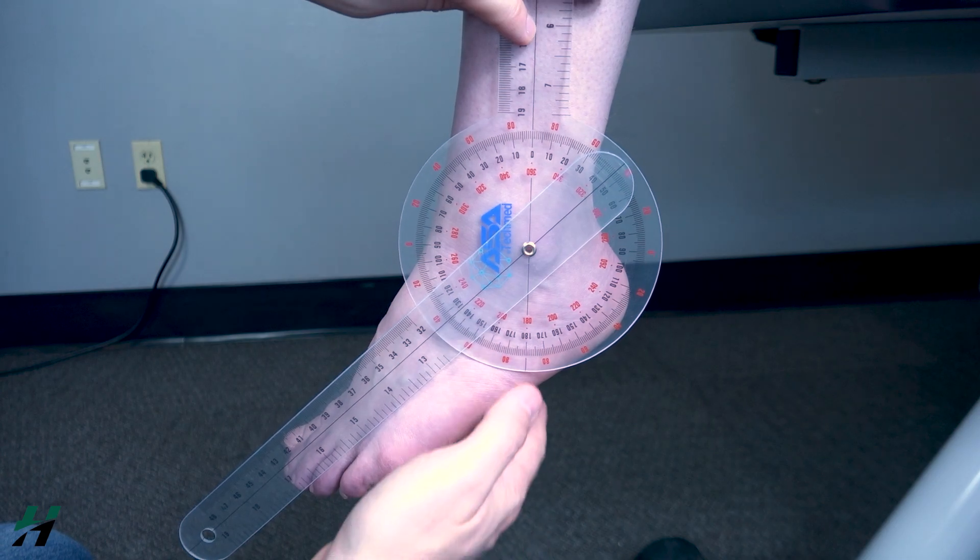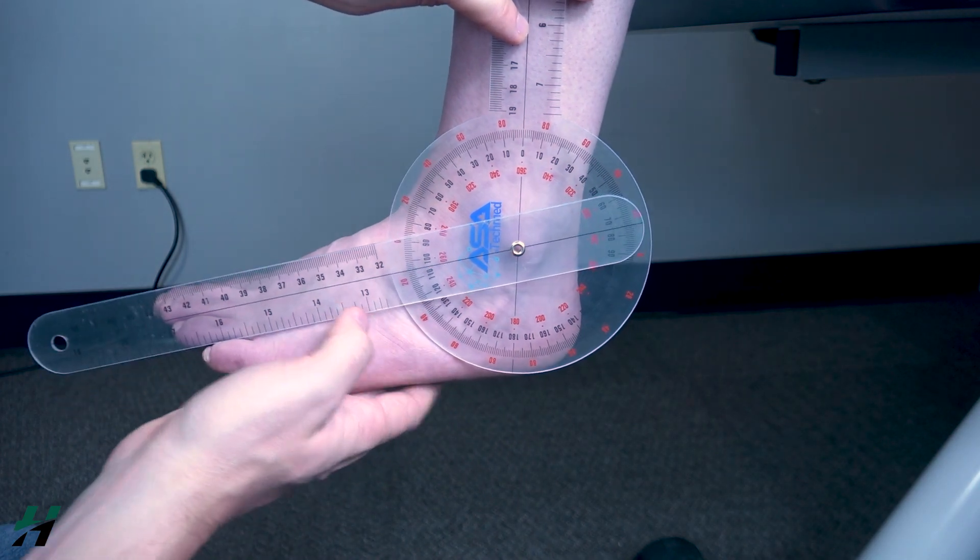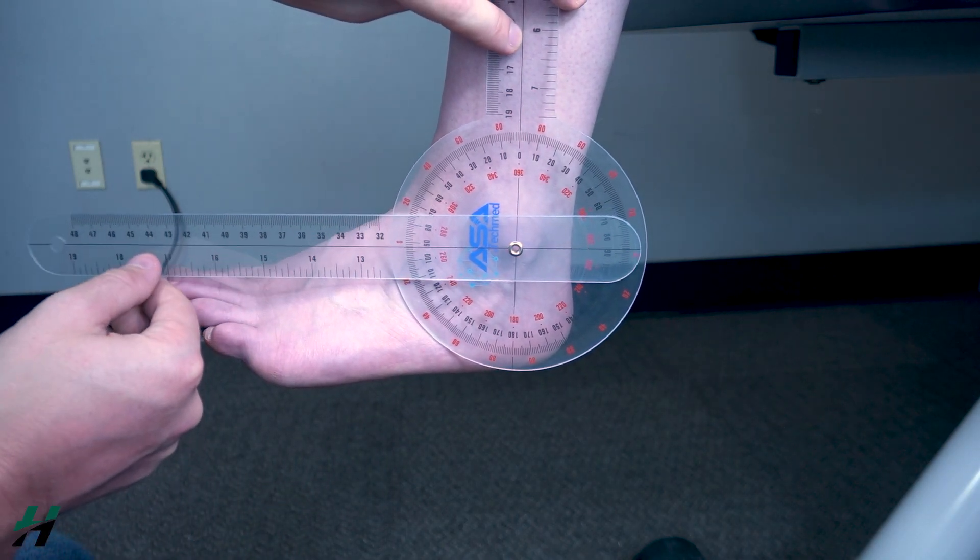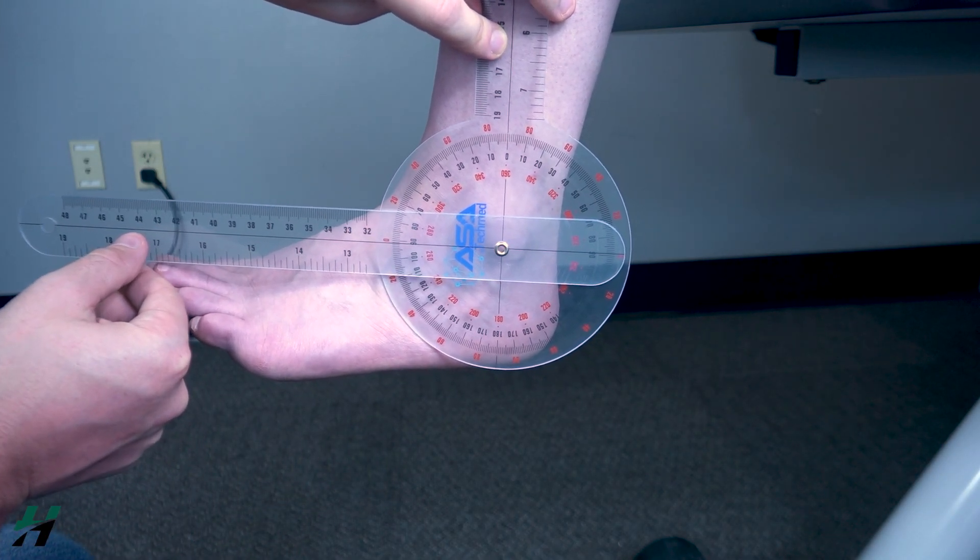Now, you want to start off with the ankle being at 90 degrees, and 90 degrees on the black scale will be zero degrees on the red scale. So we are going to follow the red scale.